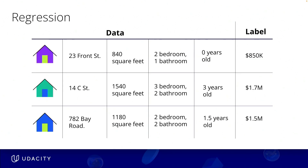Regression, another core task of supervised learning, involves predicting continuous outputs, or numbers, rather than categorizing inputs into classes. For example, in predicting house prices, the model could analyze various factors like location, size, and age of the house to estimate its market value, using historical data on house sales to make predictions.